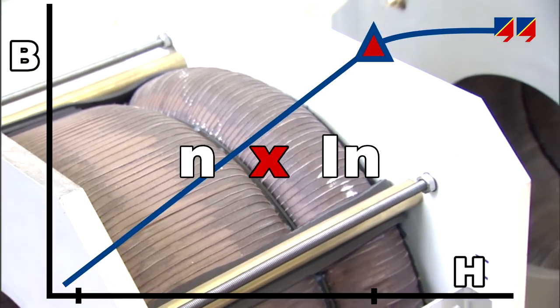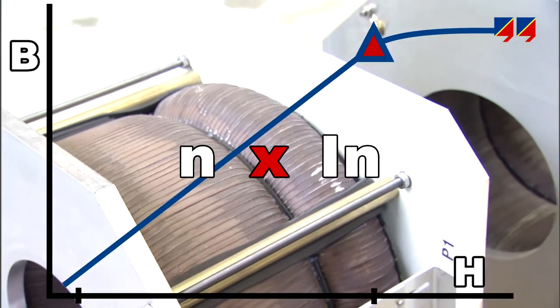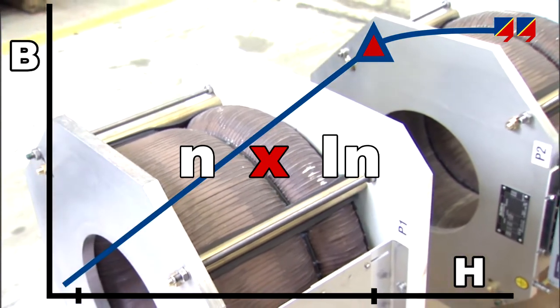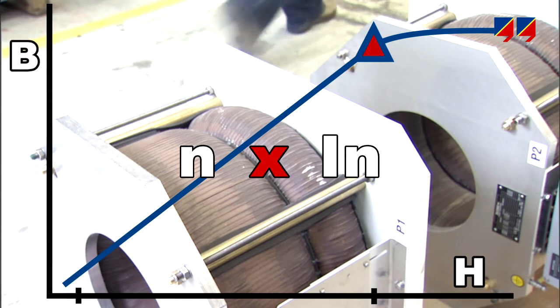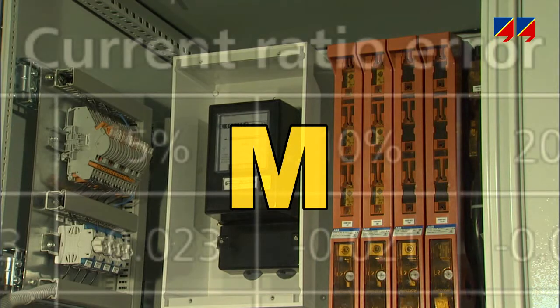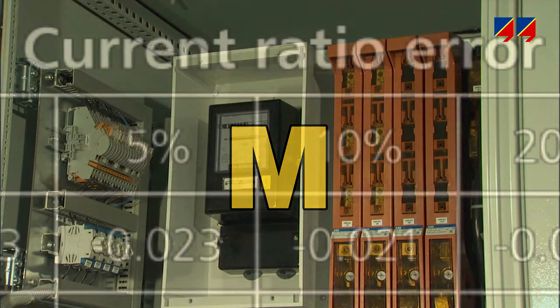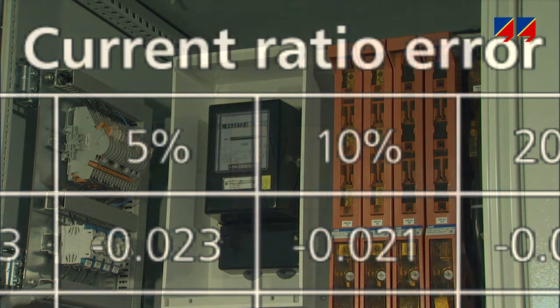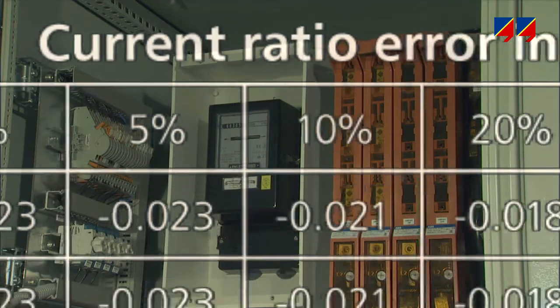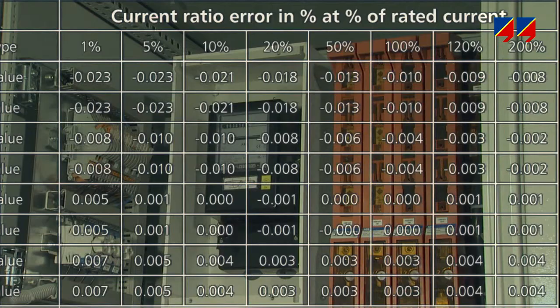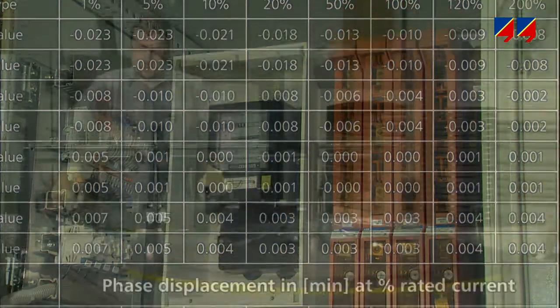The secondary current produced by the CT must be proportional to the current flowing in the power system over the whole range within a defined accuracy. Accuracy is the crucial criterion regarding metering CTs, as the financial consequences of incorrect billing may be very significant. The applicable standards define the ratio and phase accuracy which the CT has to provide in its specified operating range.